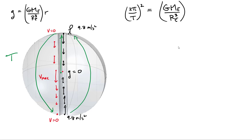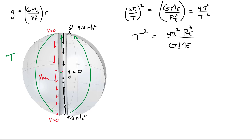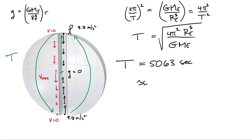Expanding the squared term, we get 4 pi squared over the period squared equals big G times mass of the Earth over radius of the Earth cubed. Rearranging, the period squared equals 4 pi squared times the radius of the Earth cubed divided by big G times the mass of the Earth. Taking the square root of both sides gives our final expression for the period. Substituting all known values for mass of the Earth and radius of the Earth, we get a period of approximately 5,063 seconds, which divides to approximately 84.4 minutes for this full round trip.